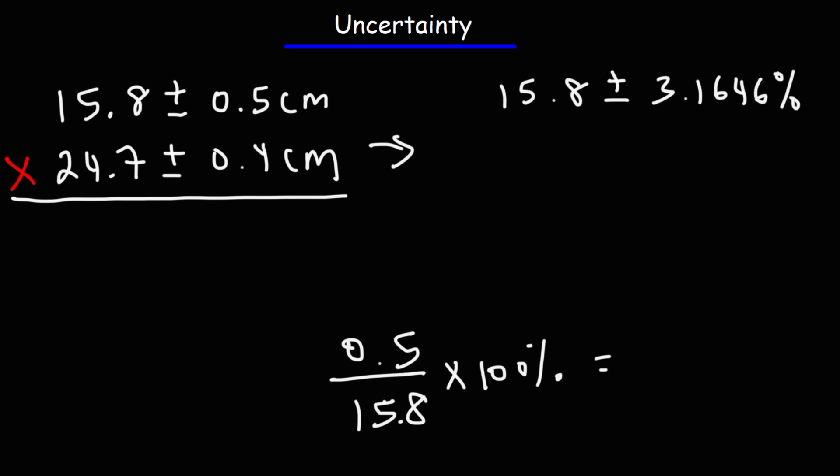Now, let's do the same thing with the other number. So it's going to be 0.4 divided by 24.7 times 100%. So that's going to be 1.6194%.